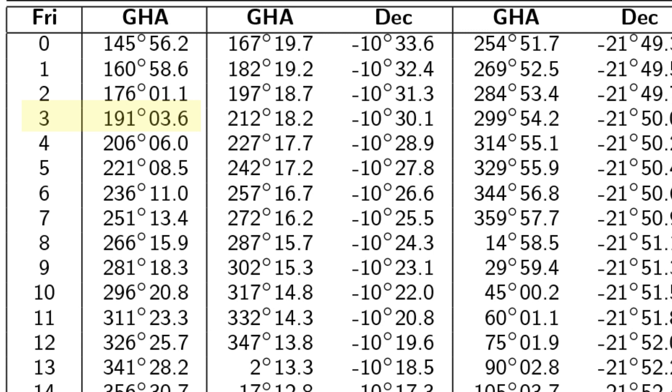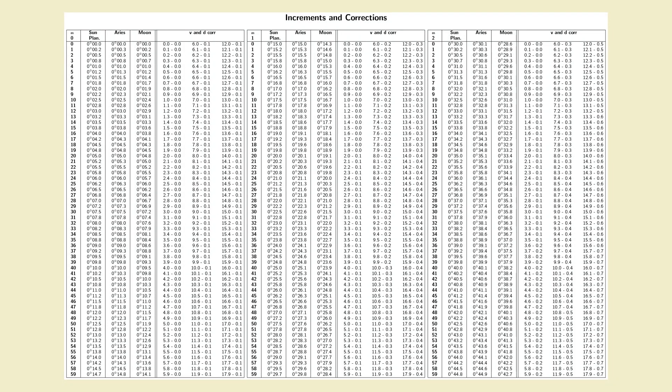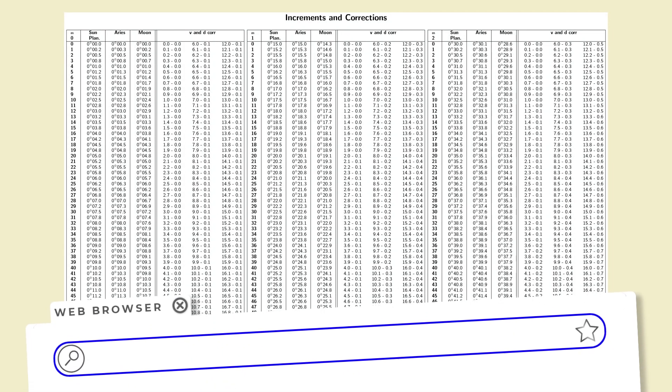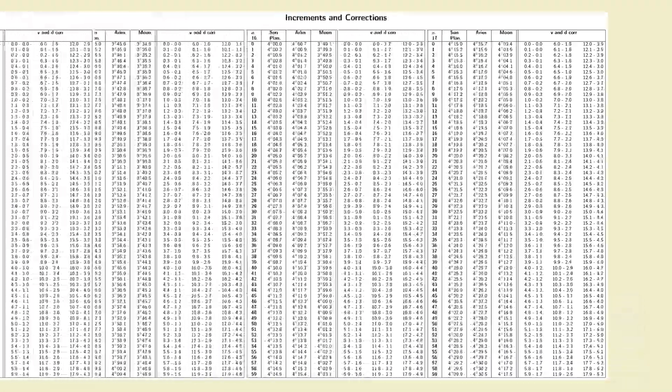We're then going to need to use increments to get to 30 minutes past the hour. So we're going to turn to the increments and corrections pages. Depending on your almanac, this will either be within the almanac itself, or it may be a separate document. If you're using the same almanac as me, it's a separate document, but it's still available from thenauticalalmanac.com.